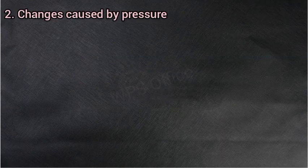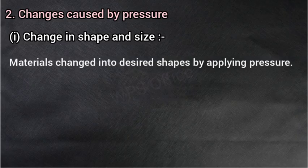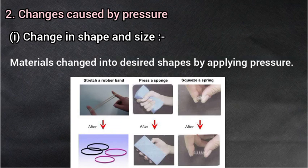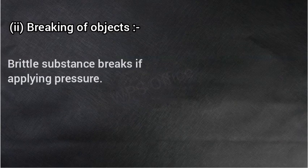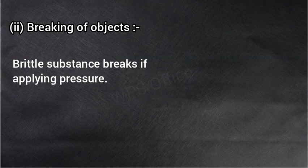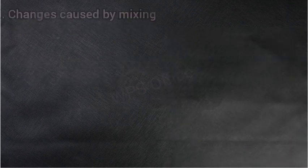And the next — changes caused by pressure, दबाव के कारण होने वाले परिवर्तन. Changes in shape and size — material can be changed into desired shape by applying pressure. किसी भी पदार्थ को हम इच्छित आकार में बदल सकते हैं जब उस पर दबाव दिया जाता है, जैसे गूंधे हुए आटे से हम रोटी का आकार दे सकते हैं. Breaking of objects — brittle substances break on applying pressure. भंगुर पदार्थ जब टूट जाते हैं — जैसे किसी लकड़ी या बर्फ के टुकड़े पर जोर से hammering करेंगे तो वो टूट जाएगा.